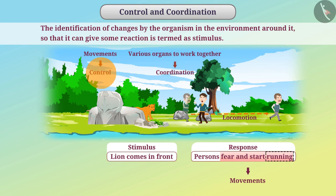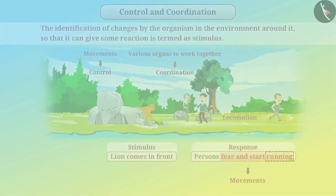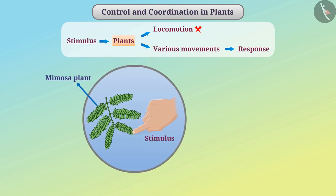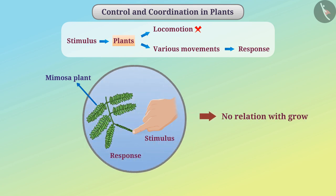Let's talk about control and coordination in plants. Plants can't change their place as animals do. However, they perform various movements in order to give a response. If we touch the mimosa plant, the leaves of the plant begin to fold up and droop. This kind of movement has no relation with growth. If the movement performed to give a response does not involve growth, then such movement is called growth-independent movement.